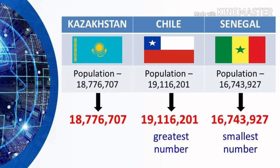What if we are comparing three numbers? Here are the populations of Kazakhstan, Chile, and Senegal. The population of Kazakhstan is 18,776,707, the population of Chile is 19,116,201, and the population of Senegal is 16,743,927. Out of these three countries, the population of Chile is the greatest number, while the population of Senegal is the smallest number.